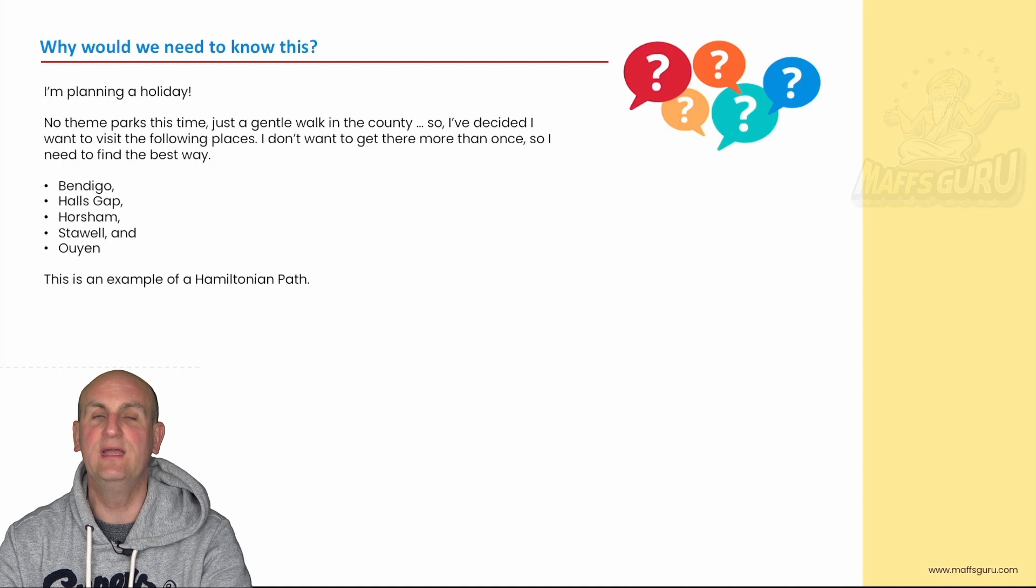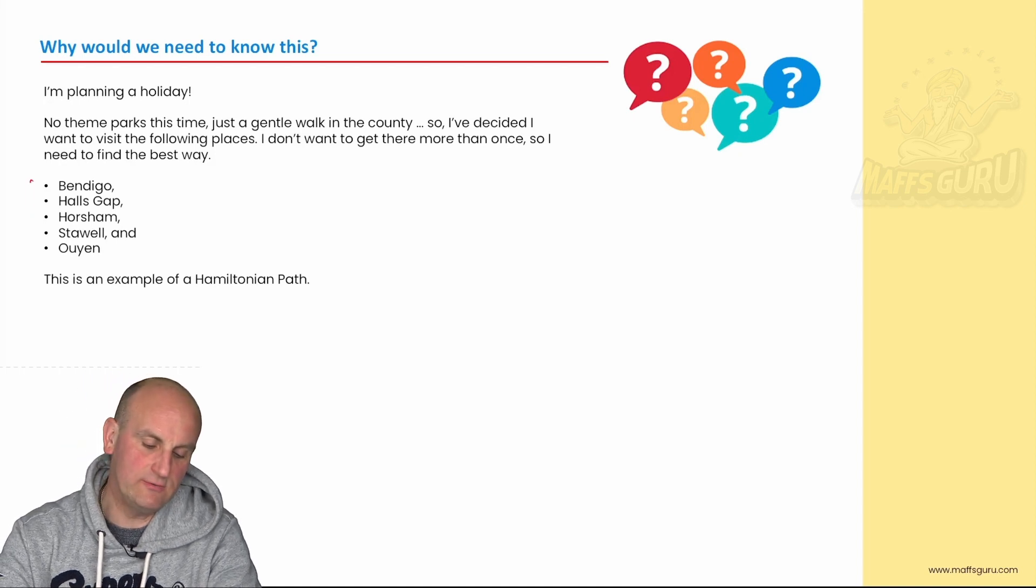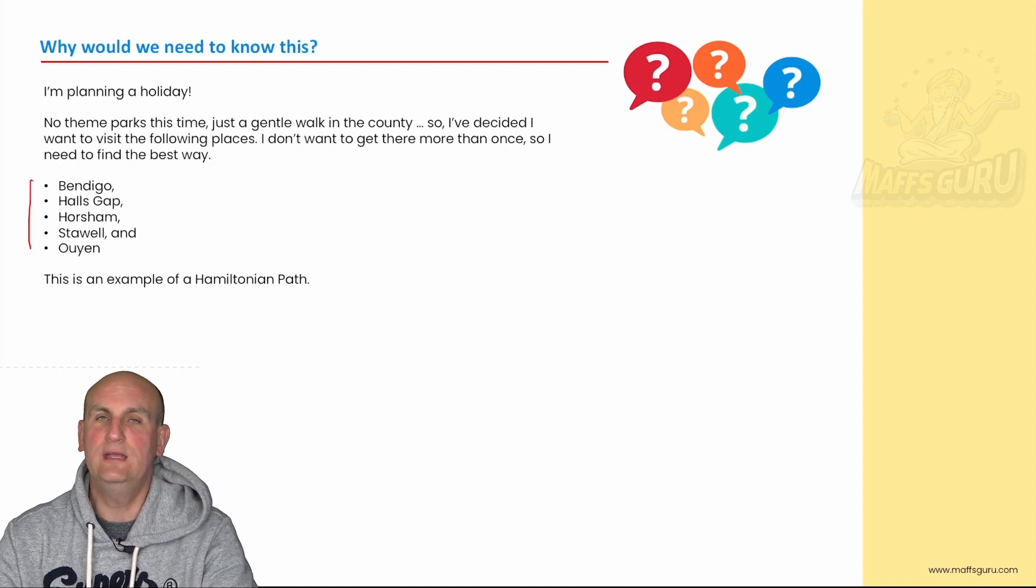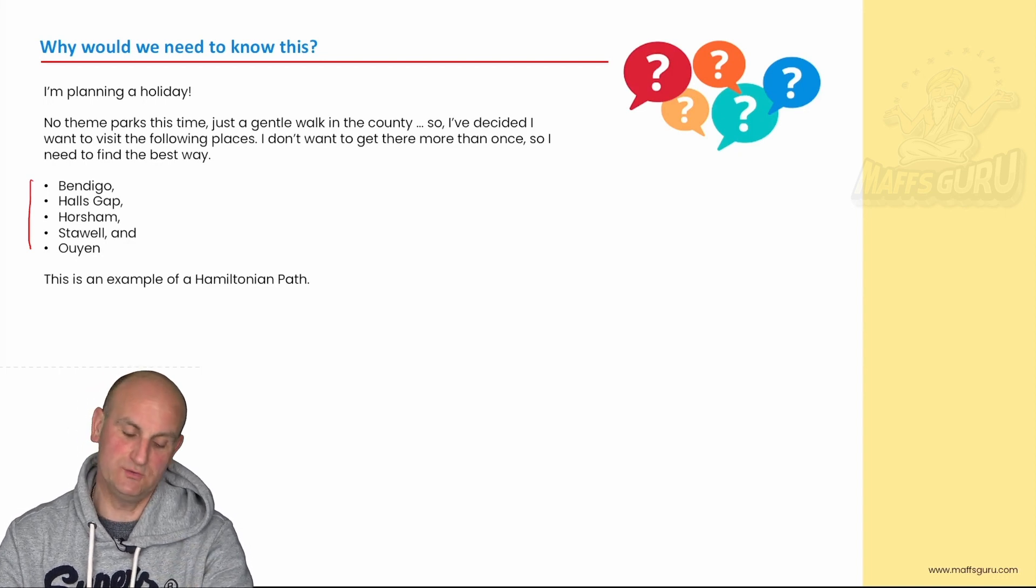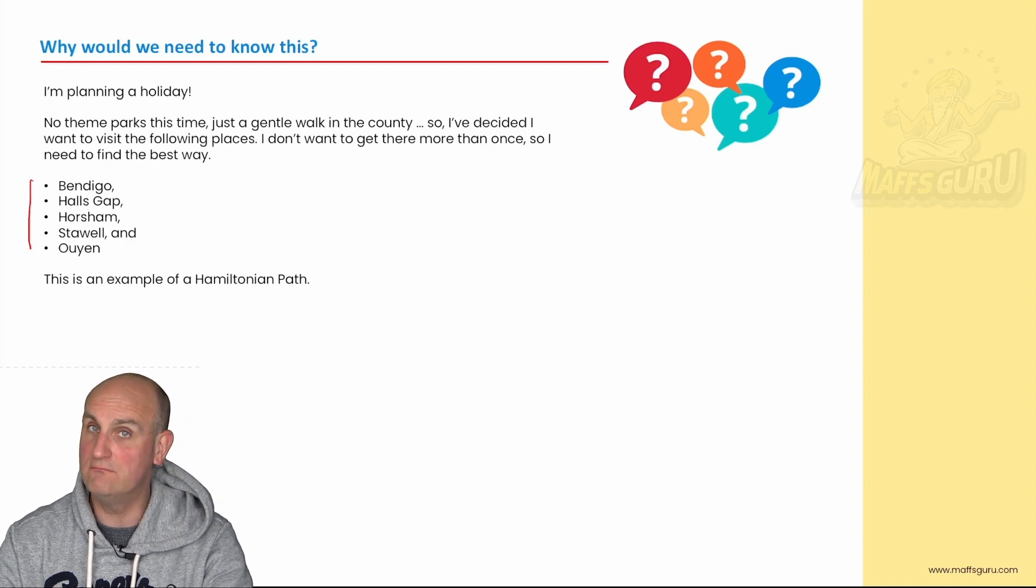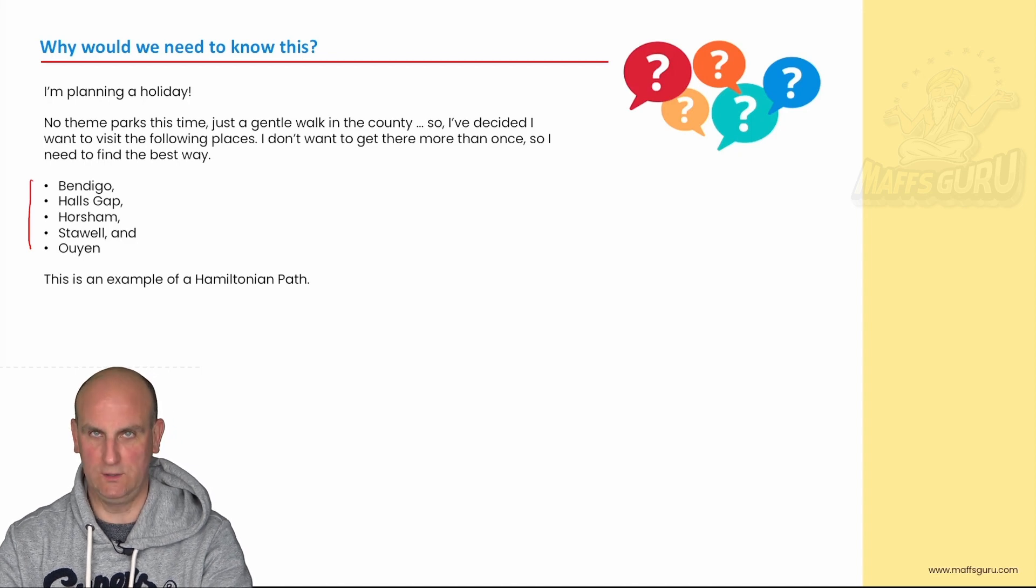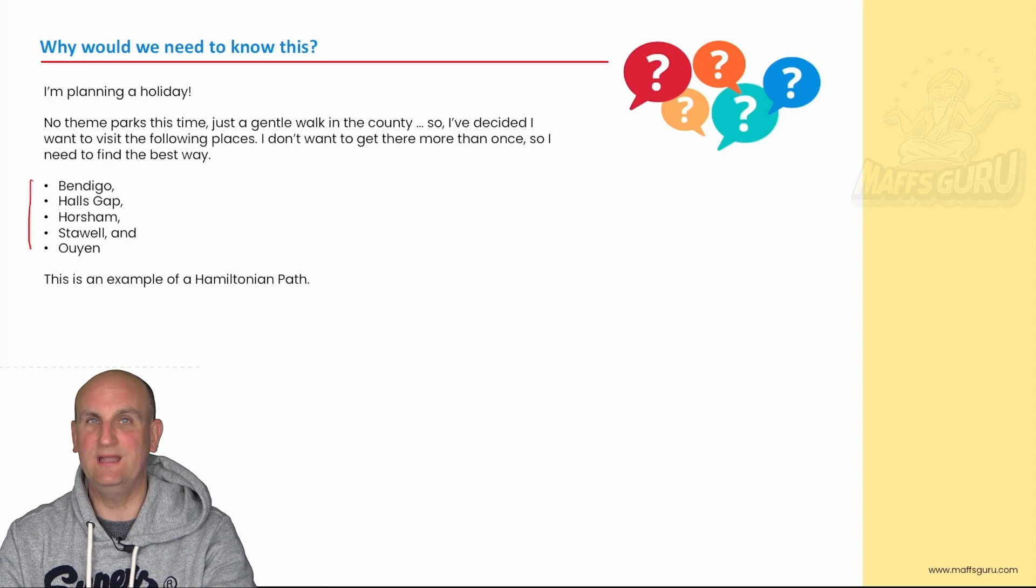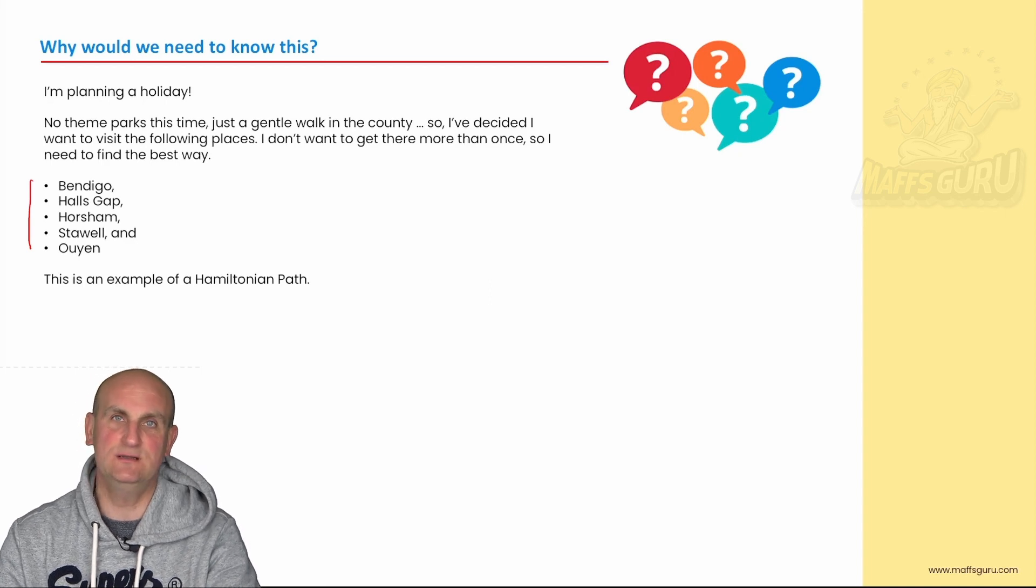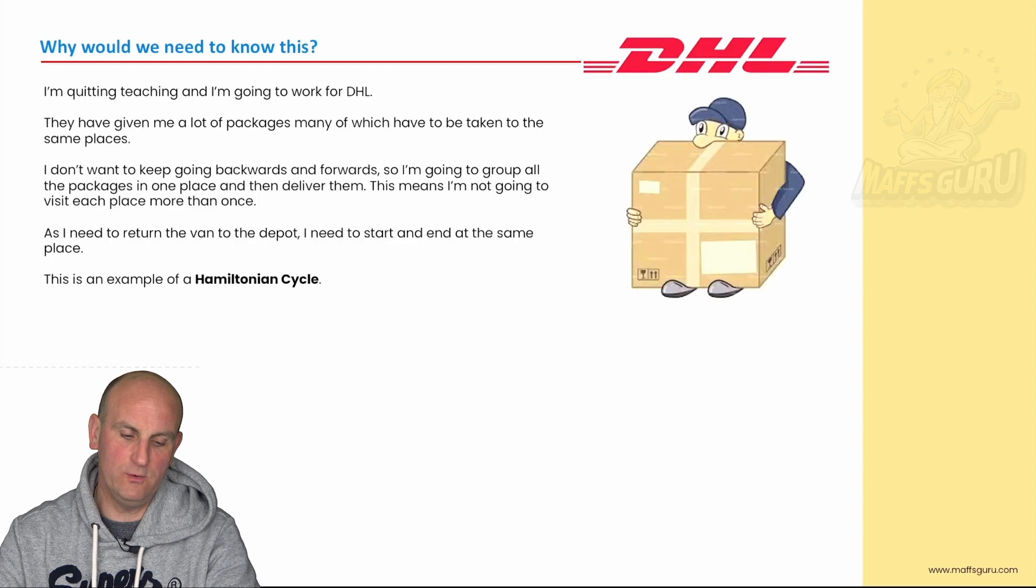Now why would we need to know this? I might want to one day head out into the great outdoors in the burning sunshine with the animals here that can kill you and I may decide I want to go to Bendigo and Halls Gap and Horsham and Starwell. I may decide to go to all of these places. Probably not because I can't pronounce half of them. But anyway how am I going to do it? Well I want to find the best way to do it. I don't want to take hours and hours to do it. So if I can do it in some sort of a loop that would be awesome.